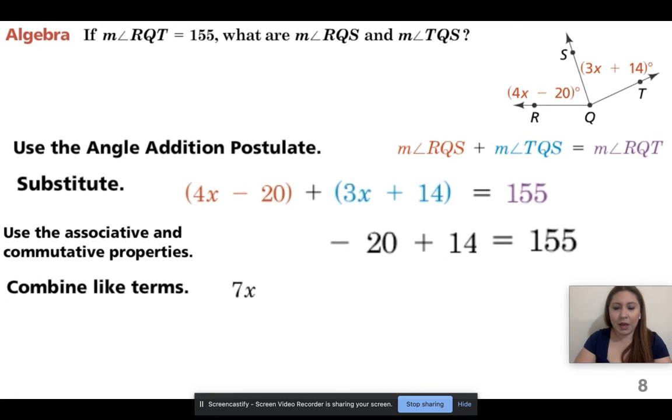So think 4 plus 3 gives me 7x. Don't forget the x. Need to remember the x. Now negative 20 plus 14. I owe you $20, and then I give you 14. How much do I still owe you? So I borrow 20, I give you 14. I owe you 6. Since I still owe you, then it's going to be negative, and then just bring down the 155.